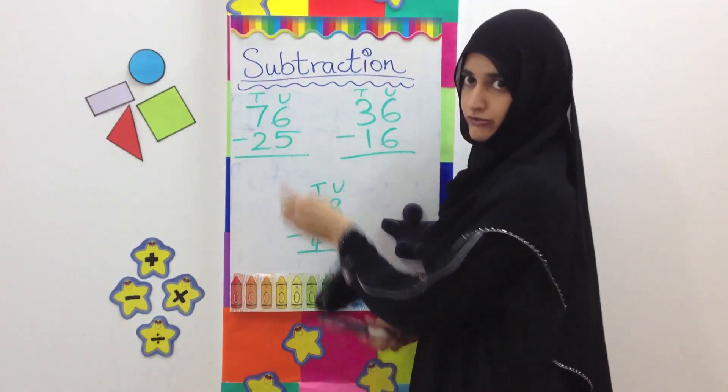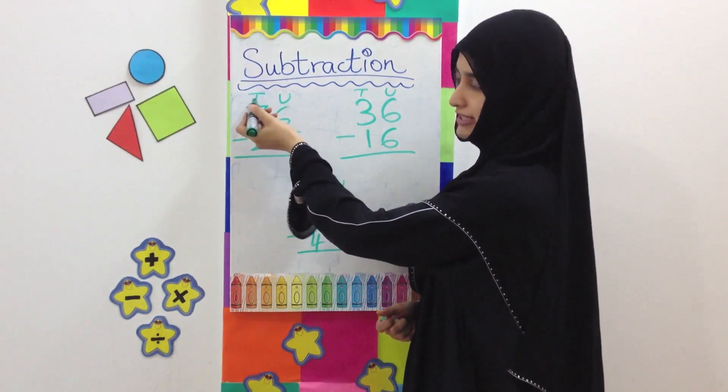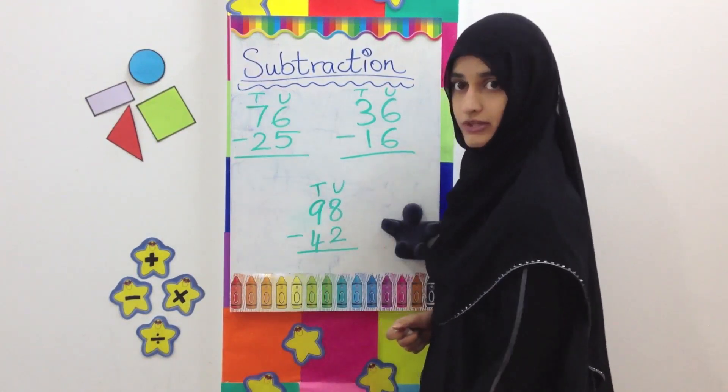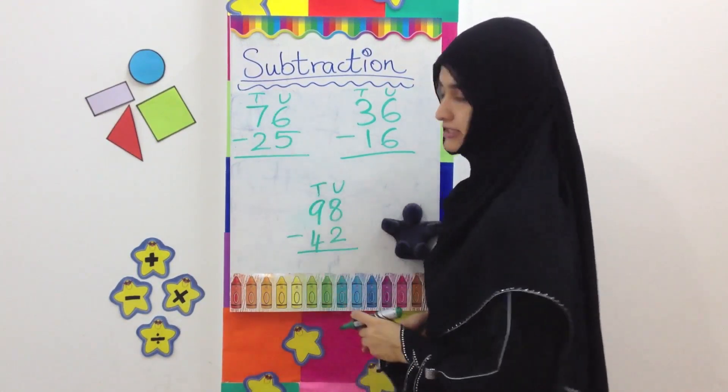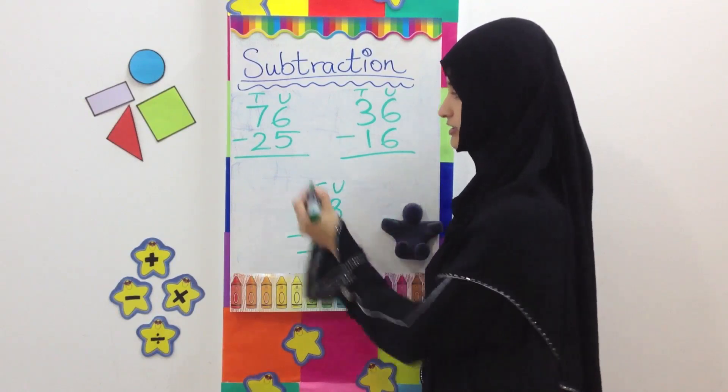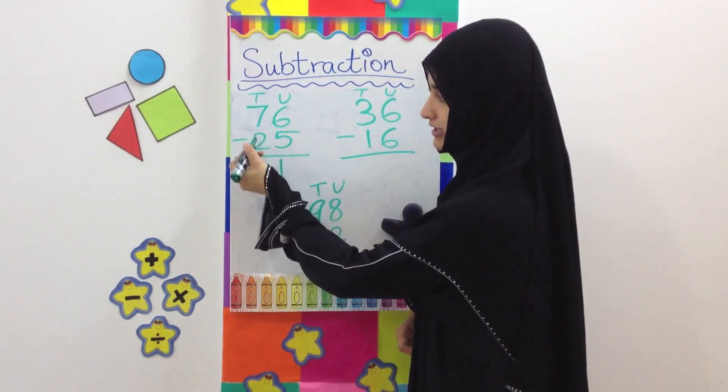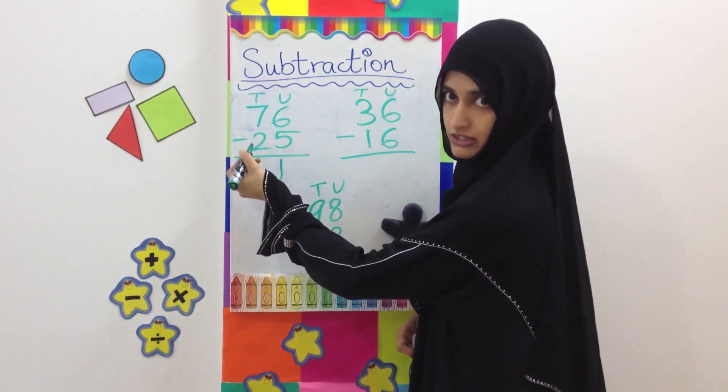76 minus 25. We have units on the top and tens on the top written here. We are going to take away the units from the units. 6 minus 5, answer is 1. 7 minus 2, the answer is 5.